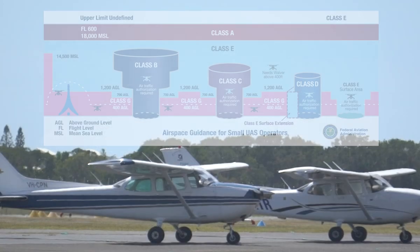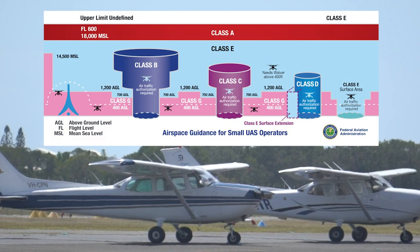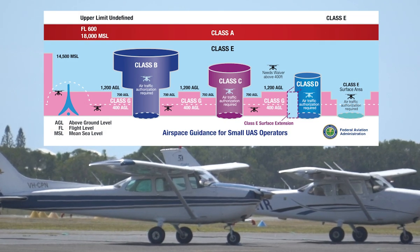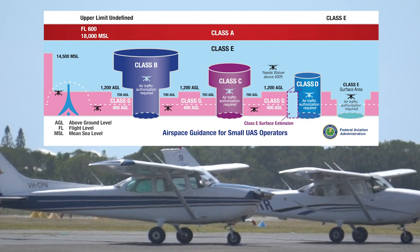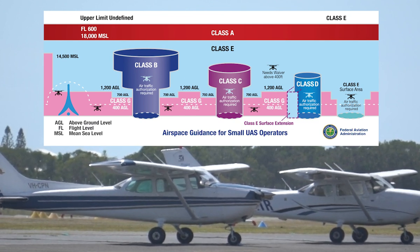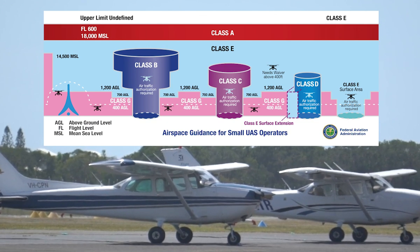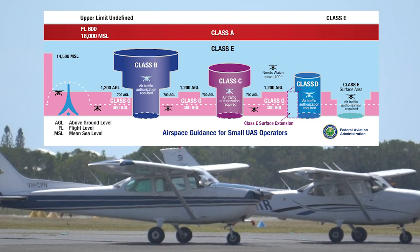Only airports located in Class A, B, C, D, and E2 controlled airspace require LAANC authorizations to operate near or around. Many smaller municipal, regional, and executive airports around the country are located in Class G uncontrolled airspace, meaning you do not need a LAANC authorization to operate near or around them.